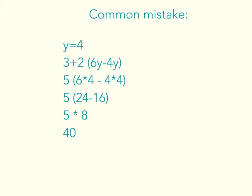This is a common mistake that most people do. When first they add 3 plus 2, and they replace y with 4, so it equals 5 (6 times 4 minus 4 times 4). And they solve in the parenthesis, which is 8, so they do 5 times 8 equals 40,